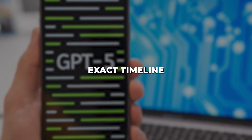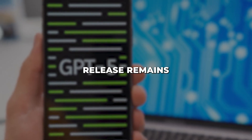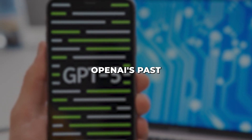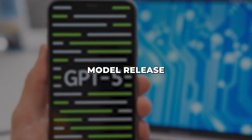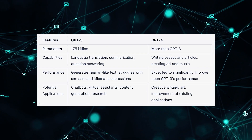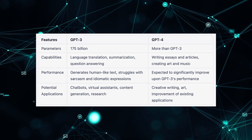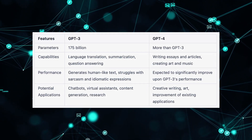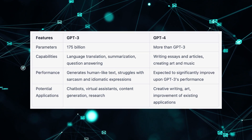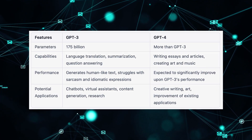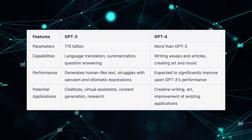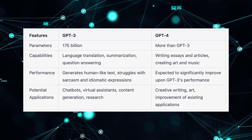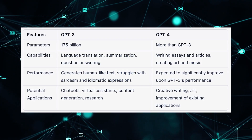While the exact timeline for GPT-5's release remains uncertain, we could make educated guesses based on OpenAI's past model release patterns. GPT-3.5 arrived in November 2022, followed by GPT-4 just four months later in March 2023. Extrapolating this pace, we could plausibly see GPT-5 unveiled later this year, potentially before 2023 concludes.